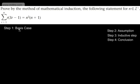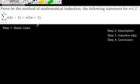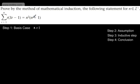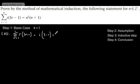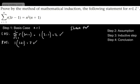Let's start off with our basis case. We will let n be equal to 1. We substitute this into the left-hand side and evaluate, then substitute into the right-hand side and show the two things are equal. On the left-hand side, the sum from r equals 1 to 1 of r(3r minus 1) gives us 1 times (3 minus 1), which is 2. On the right-hand side, subbing in 1 gives us 1 squared times (1 plus 1), which is also 2. So shown true for n equals 1.